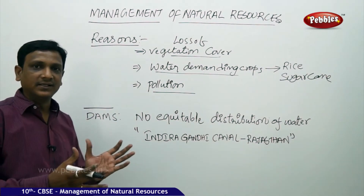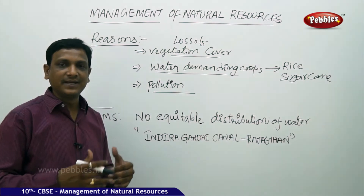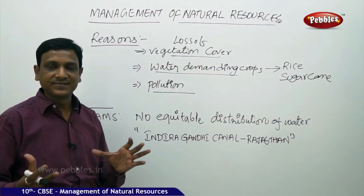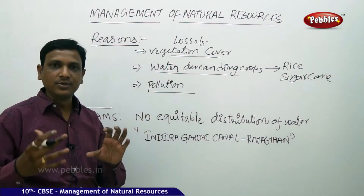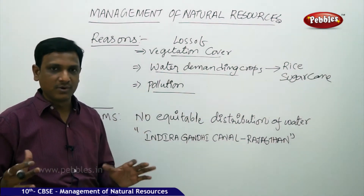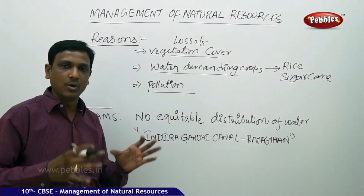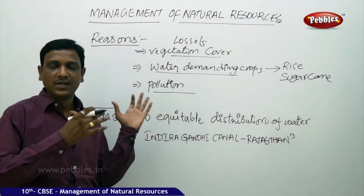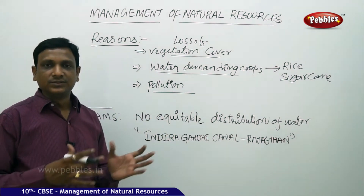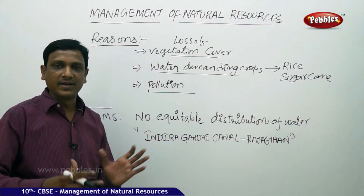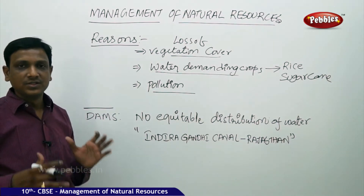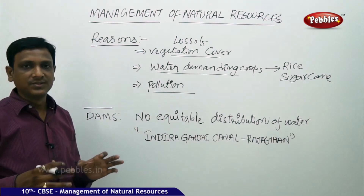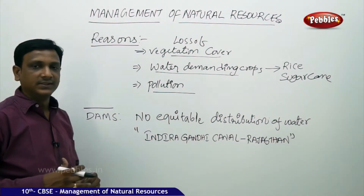After the entry of the British, the scenario changed. They started constructing big dams. People came to the conclusion that maintenance of water bodies was not their duty — that it was the duty of the government. So the government took the responsibility of building big dams and providing water through irrigation canals. People totally neglected the local water bodies, and it led to water crisis.